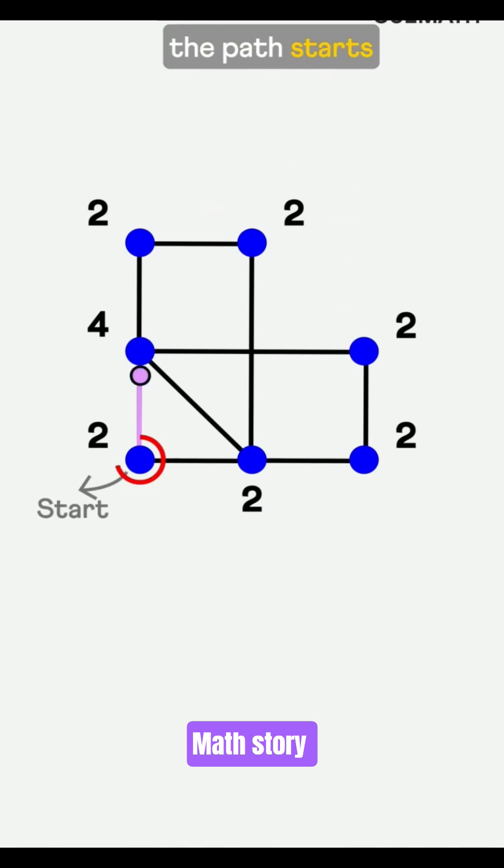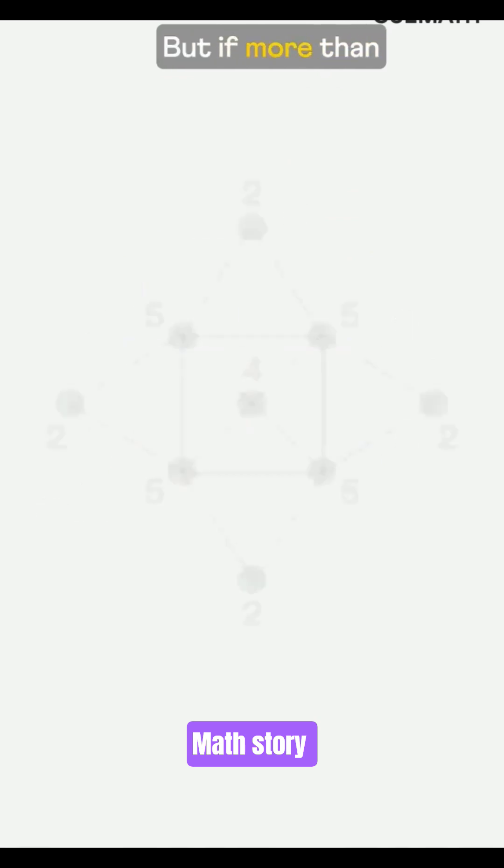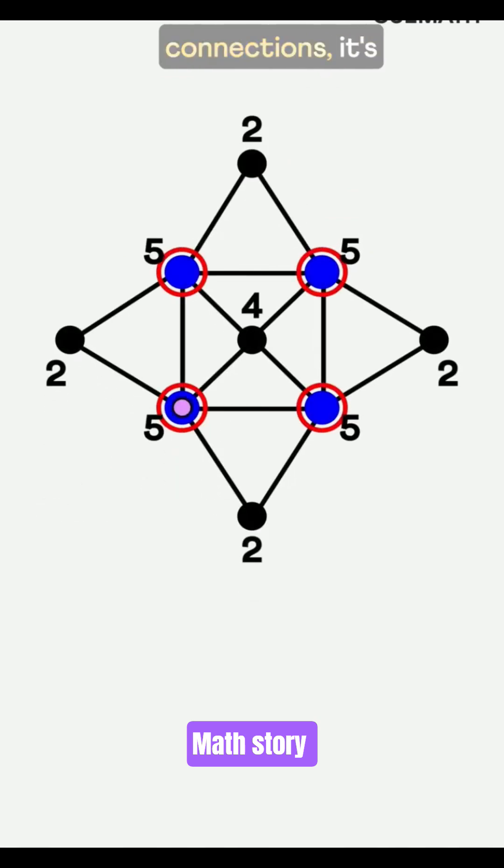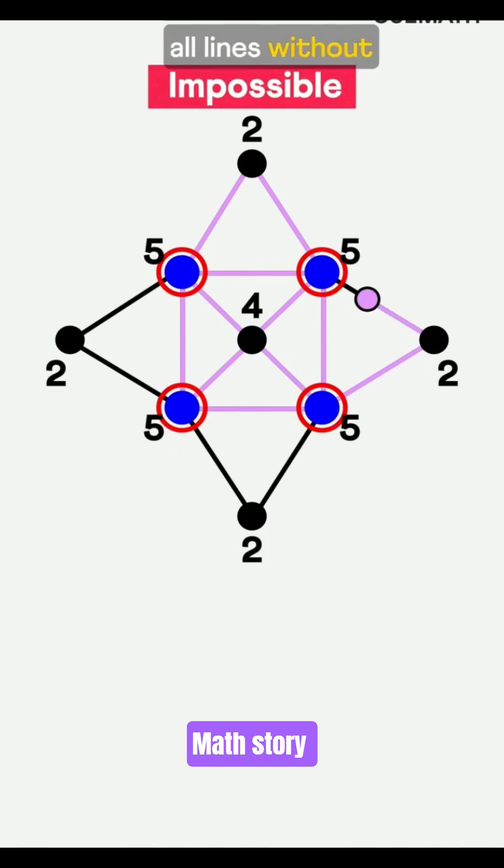If all are even, the path starts and ends at the same point. But if more than two points have odd connections, it's impossible to cover all lines without repeating.